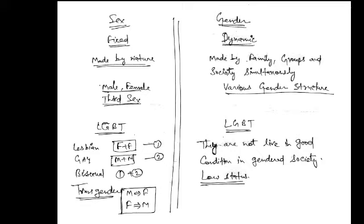Bisexual means both sexes. That is, female perform sexual intercourse with male and female, and male also do sexual relationship between male and female both. So this is all about the LGBT community.